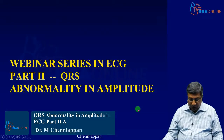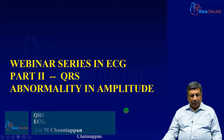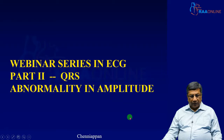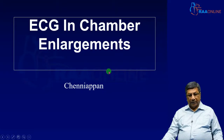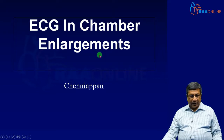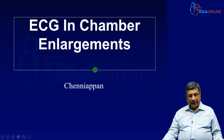Now, we are entering into looking at the abnormalities in ECG. The first abnormality we are going to look at will be chamber enlargement. Although echocardiography is the best modality to diagnose chamber enlargement, ECG serves as a very simple and cost-effective investigation, especially in peripheries and rural and semi-urban areas, to suspect chamber enlargement with a simple investigation like electrocardiogram.